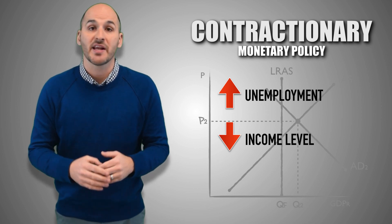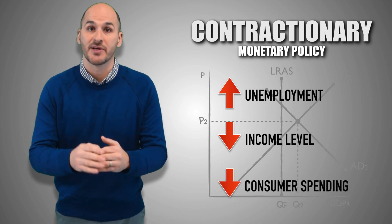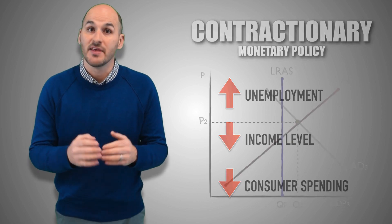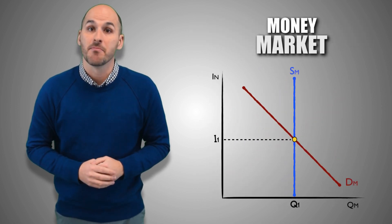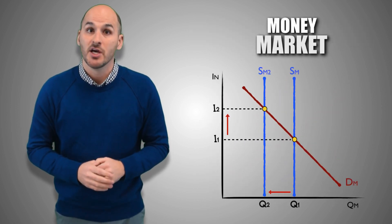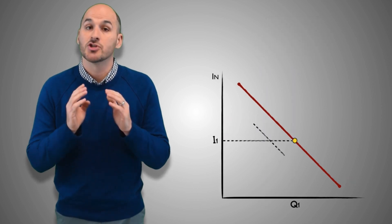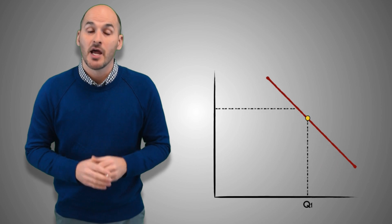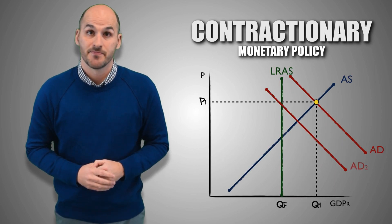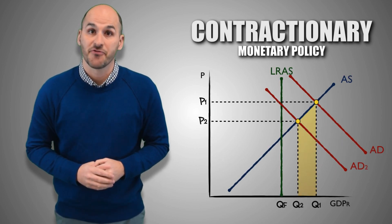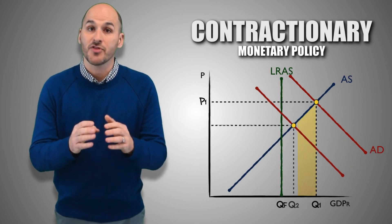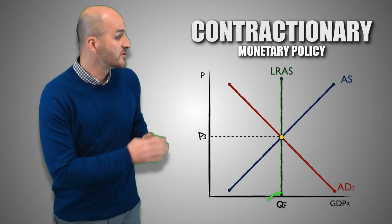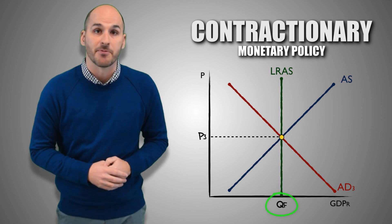With falling income levels, consumer spending decreases, driving aggregate demand to lower levels. In the end, the initial contractionary monetary policy decreased the money supply and drove up nominal interest rates, which decreased investment spending and reduced aggregate demand. This drove down excessive inflation, brought the unemployment rate back down to 4-6%, and returned the economy to its full employment level of real GDP output.